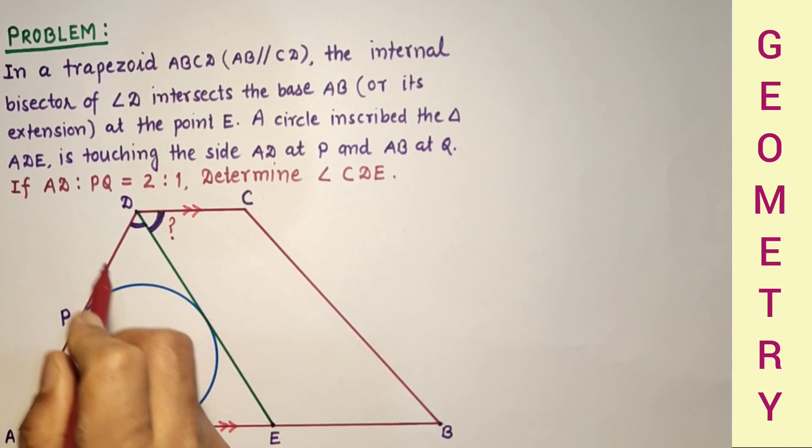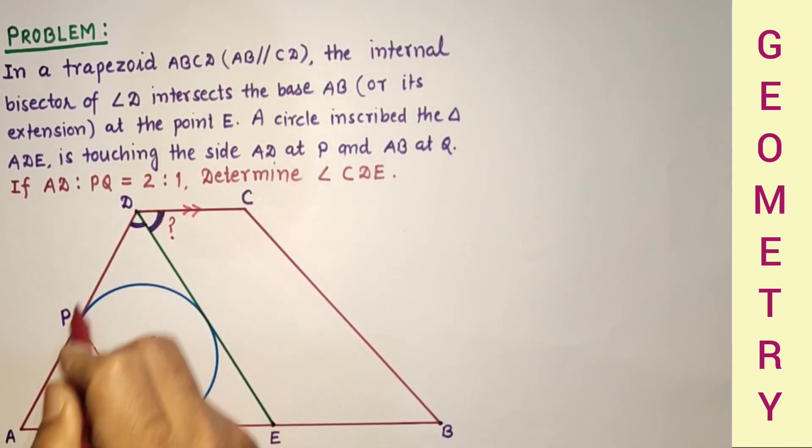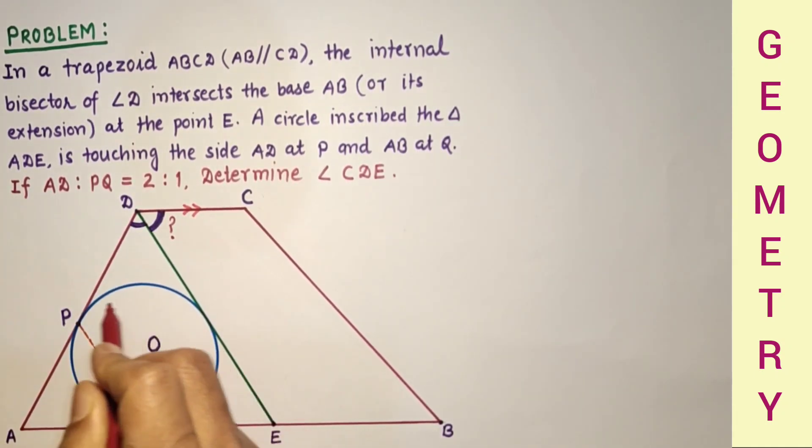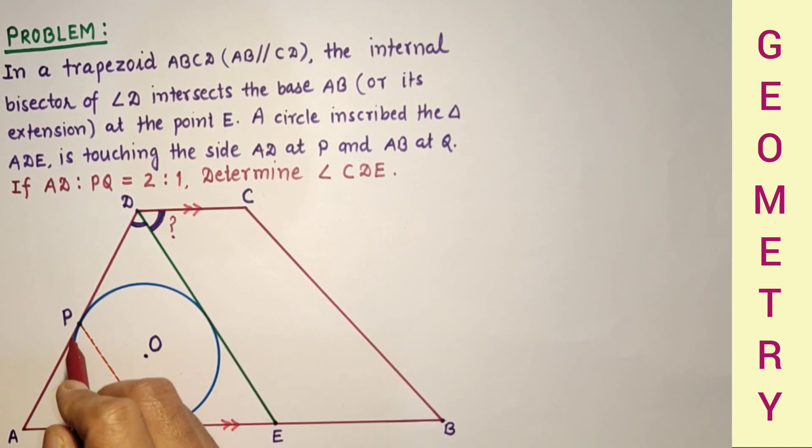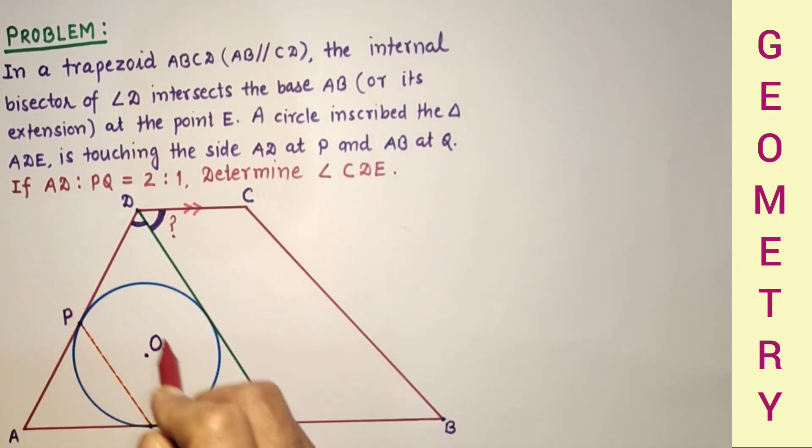DE is the angle bisector of angle CDA and this circle is inscribed in triangle AED. Points P and Q are points of contact on DA and AE and ED. All three sides are tangent to the circle.